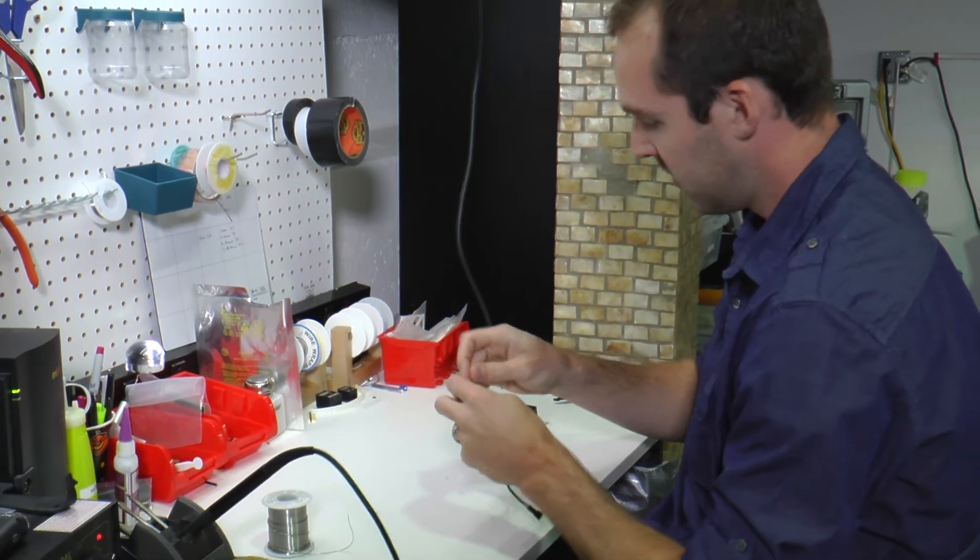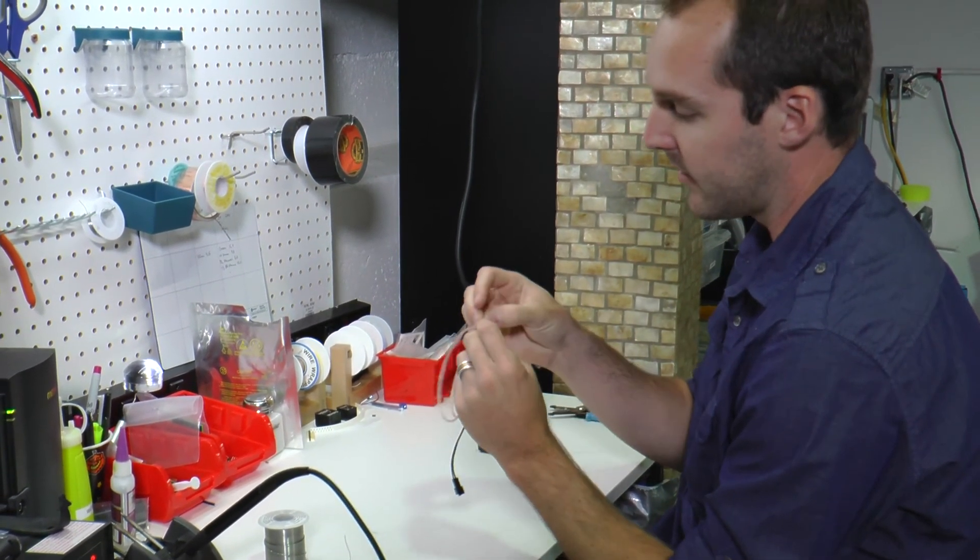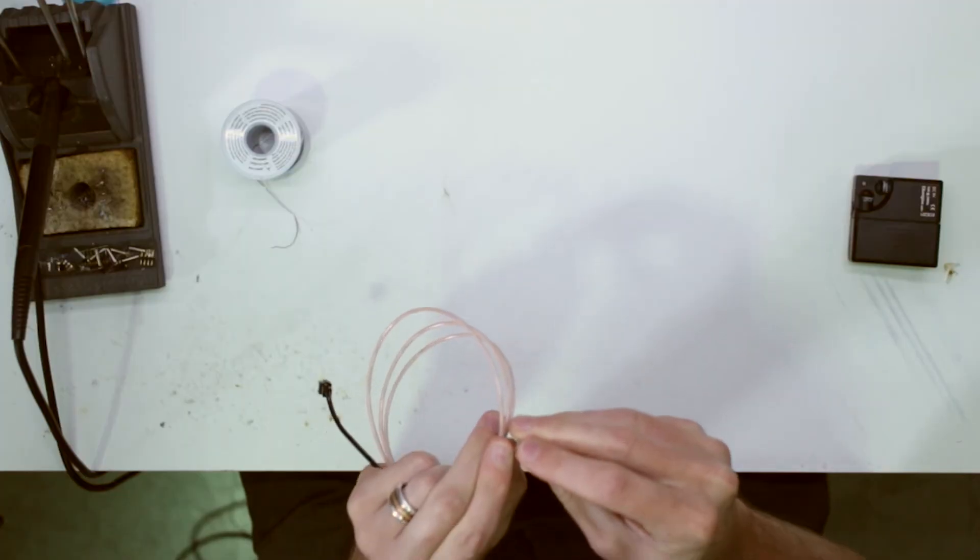Lastly go ahead and snip off about a quarter of an inch of wire at an angle and slip your end cap right over the top.